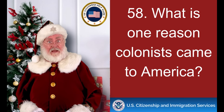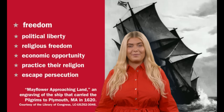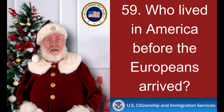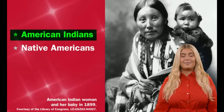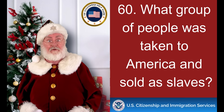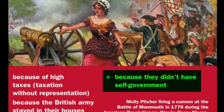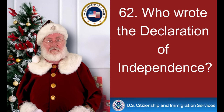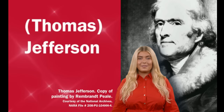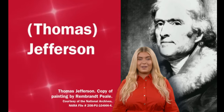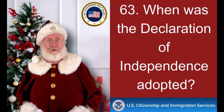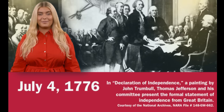What is one reason colonists came to America? What group of people was taken to America and sold as slaves? Why did the colonists fight the British? Because they didn't have self-government. Who wrote the Declaration of Independence? Thomas Jefferson. When was the Declaration of Independence adopted? July 4, 1776.